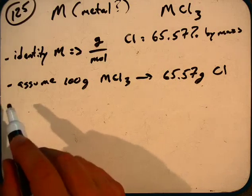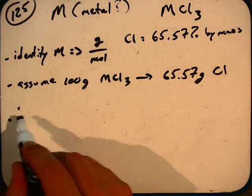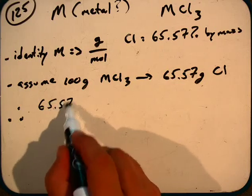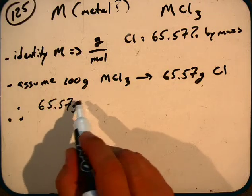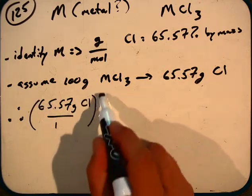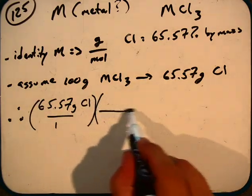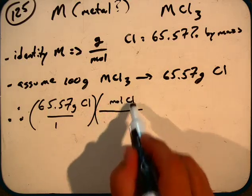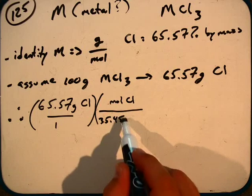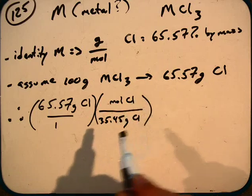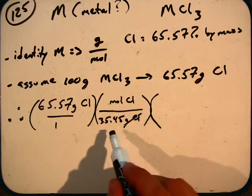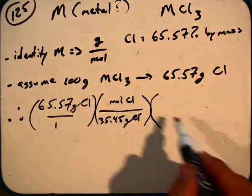That allows us then to solve the question, because what we can do is convert our 65.57 grams of chlorine, and we can use the atomic mass of chlorine. For every one mole of Cl, we have 35.45 grams of Cl. We get that off the periodic table. And so now we've converted out of grams of Cl, and now we're in moles of Cl.